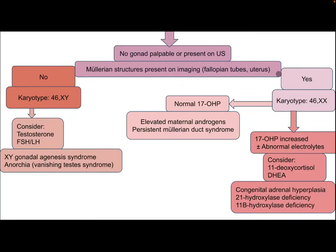If Müllerian structures are present on ultrasound or palpation and the karyotype is 46XX, check 17-hydroxyprogesterone and electrolytes. If elevated 17-hydroxyprogesterone or abnormal electrolytes, consider 11-deoxycortisol and DHT; differential diagnosis is congenital adrenal hyperplasia — 21-hydroxylase deficiency or 11-beta-hydroxylase deficiency. If 17-hydroxyprogesterone is normal, the differential includes elevated maternal androgen and persistent Müllerian duct syndrome.